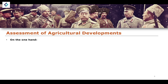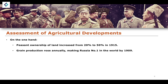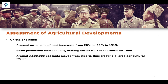Assessing agricultural developments: on the one hand, peasant ownership of land increased from 20% to 50% by 1915 as a result of these new initiatives — contributing to better agricultural output and better standards of living for the majority of the population, who were working in the peasantry. Grain production also rose annually, making Russia the number one grain exporter in the world by 1909. Around 3.5 million peasants moved to Siberia, creating a large agricultural region that could be utilized for greater production of agricultural products.